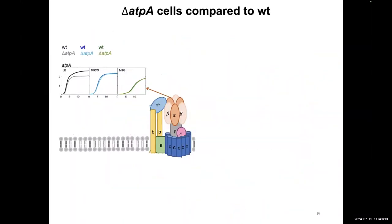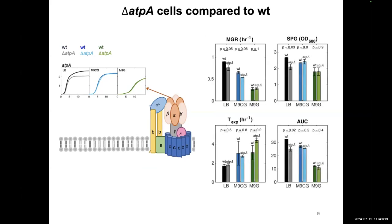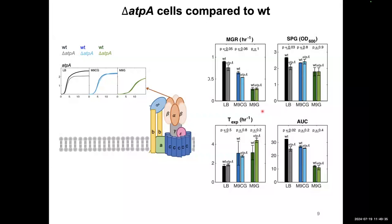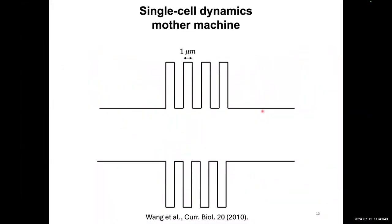We decided to look in detail at the ATP-A mutant, where it was interesting that there is a difference in the highly nutritious condition but no difference in the low nutrition conditions. Comparing ATP-A to wild type, we see the same thing in the four growth parameters — lower difference in M9G compared to LB. From here I'll move on to single cell dynamics, and at the end I'll connect single cell dynamics back to population growth.